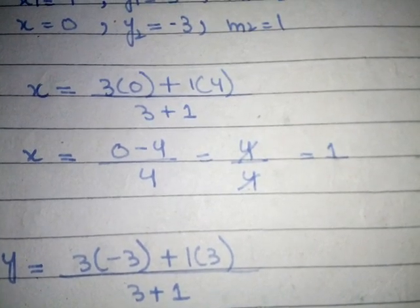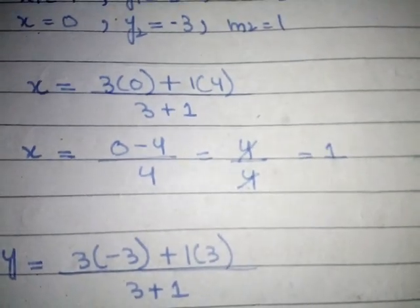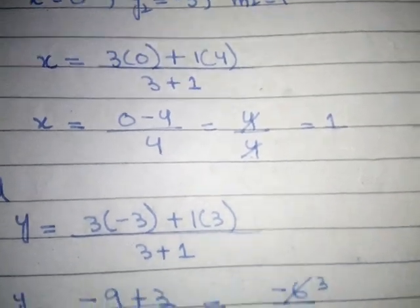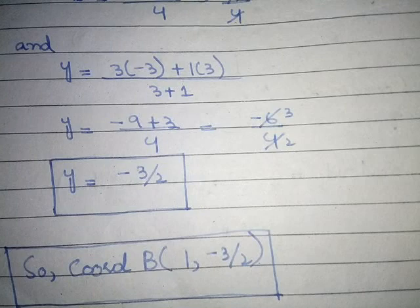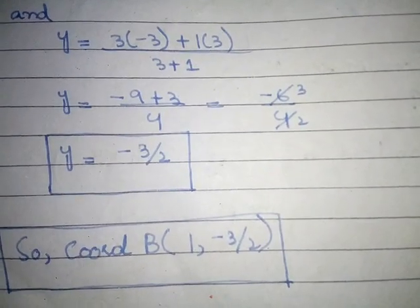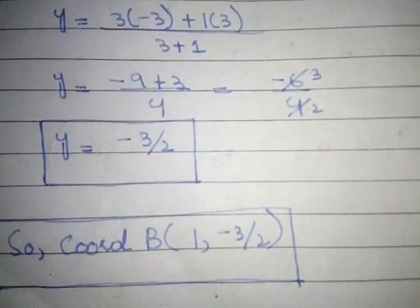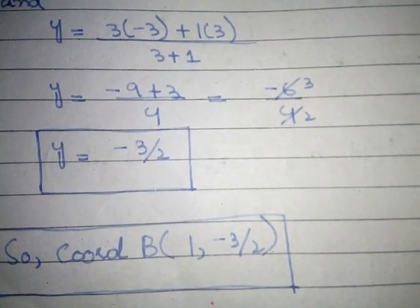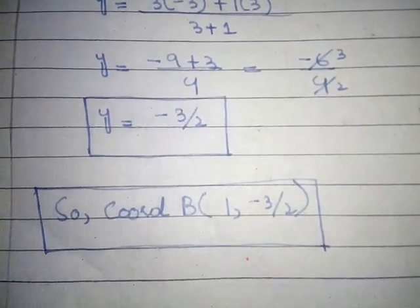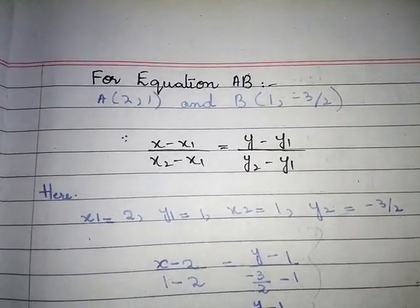3 times 0 = 0, so x = (0 + 4)/4 = 4/4 = 1. For y: y = (3·(-3) + 1·3)/(3 + 1) = (-9 + 3)/4 = -6/4 = -3/2. So coordinate B is (1, -3/2).